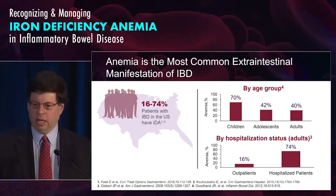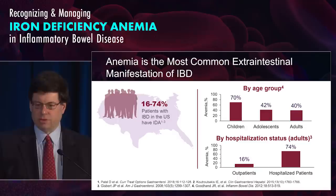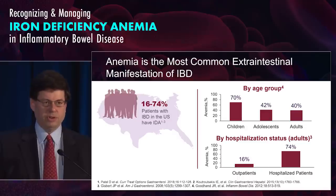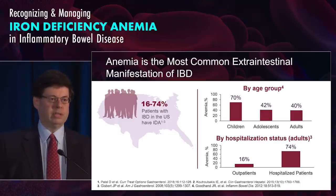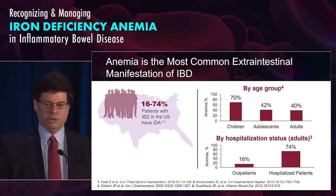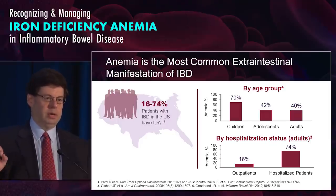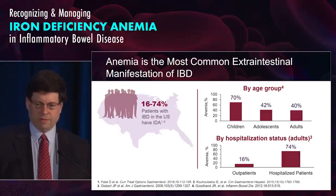If you look at different age groups, there are different rates of occurrence, anywhere from 40 to 70 percent, with children having some of the highest rates. But the most common scenario you may see this is in hospitalized patients. Nearly three-quarters of hospitalized patients will have anemia, and we'll define what we mean by anemia shortly.